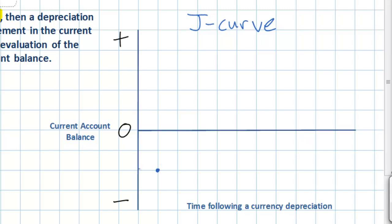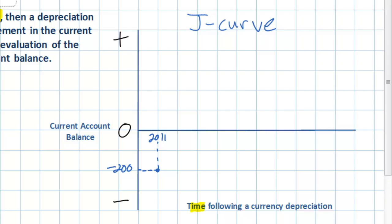On our axis we're going to label the United States with a current account deficit of negative 200 billion dollars. Let's assume we start at the date of 2011, and we see that along our horizontal axis — which is time — at 2011 the current account balance in the United States is negative 200. This is just a hypothetical situation, and we want to see what would happen following a depreciation of the US dollar to the current account balance over time.